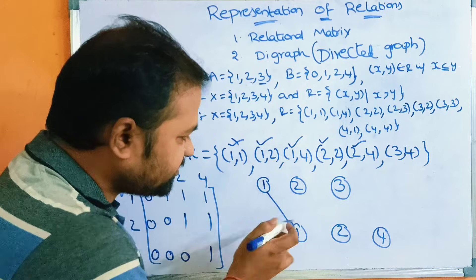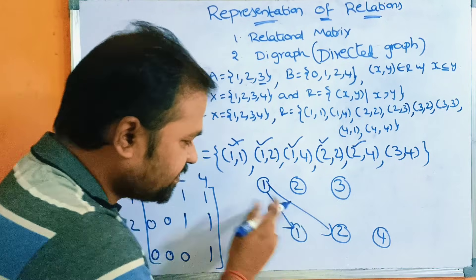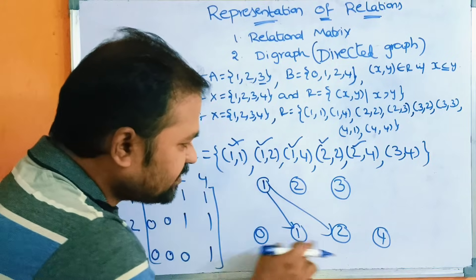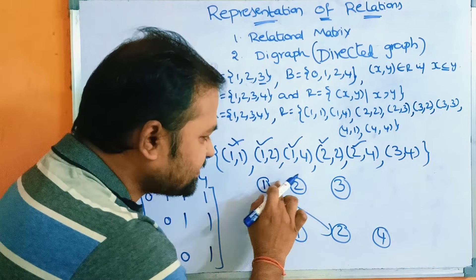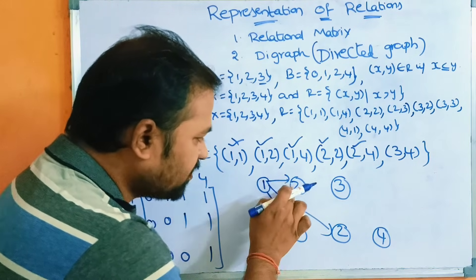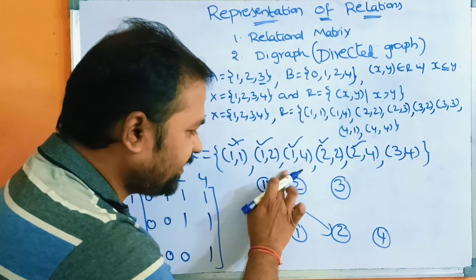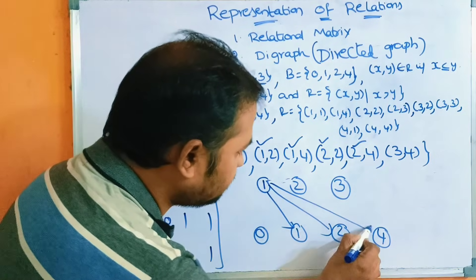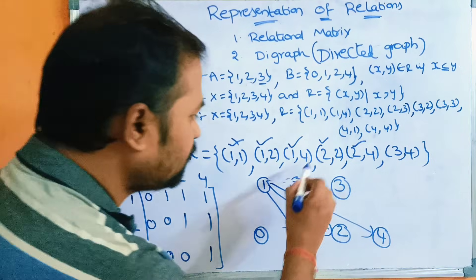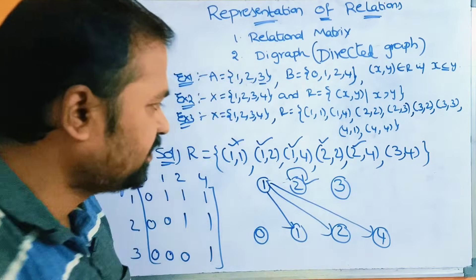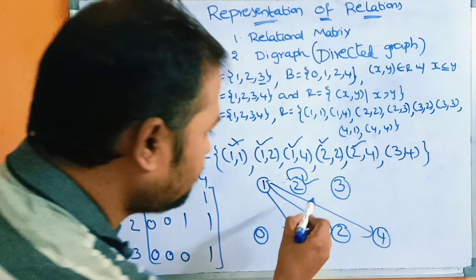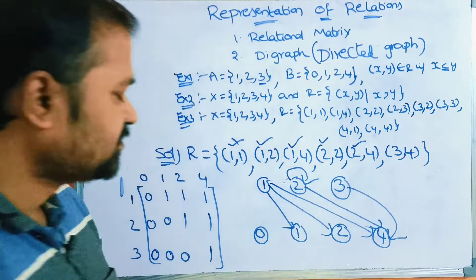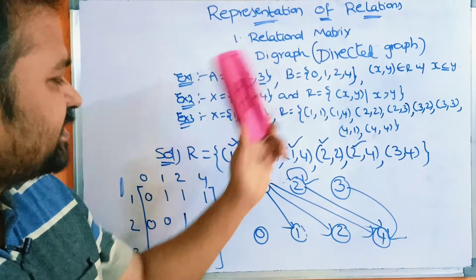From the pair (1,2), draw an edge. For (1,4), draw an edge from 1 to 4. For (2,2), since both endpoints are 2 this forms a self-loop. For (2,4), draw an edge from 2 to 4. For (3,4), draw an edge from 3 to 4. This is the complete digraph for this problem.